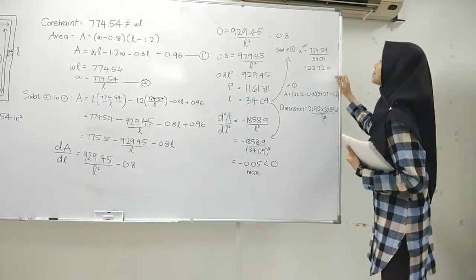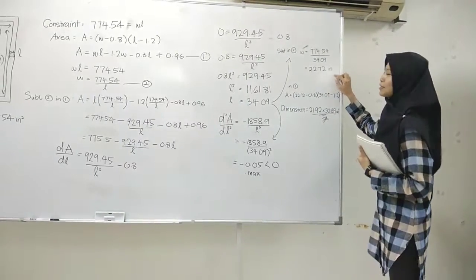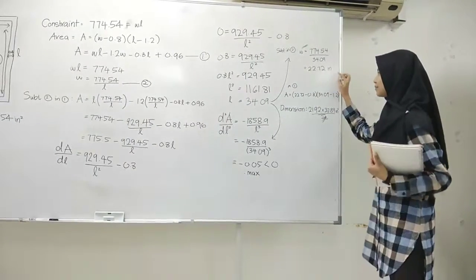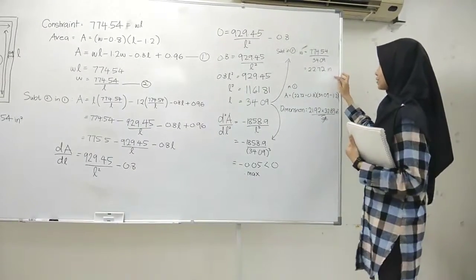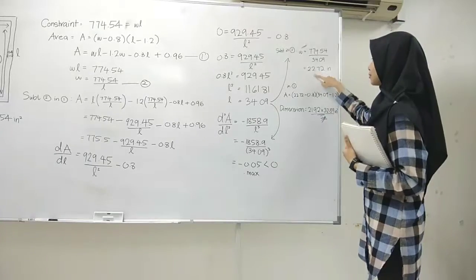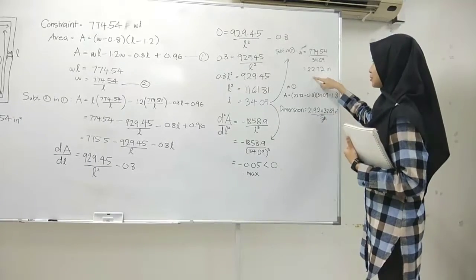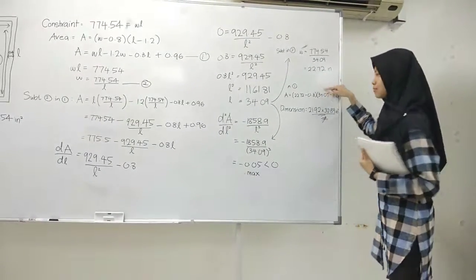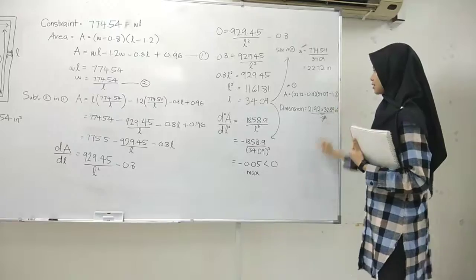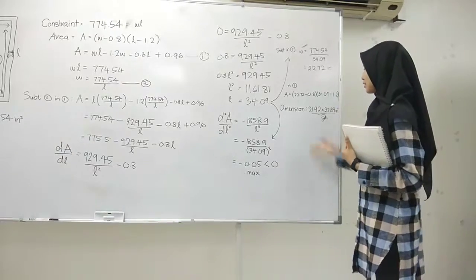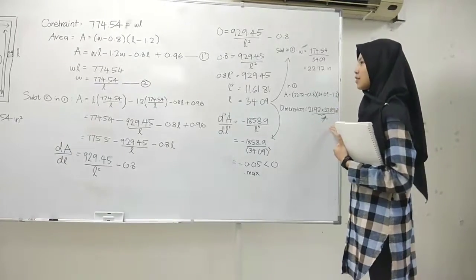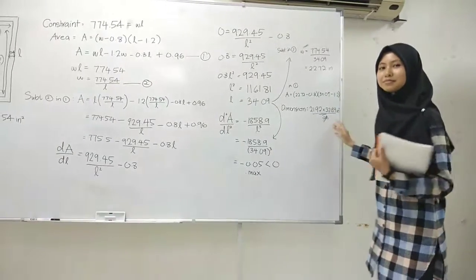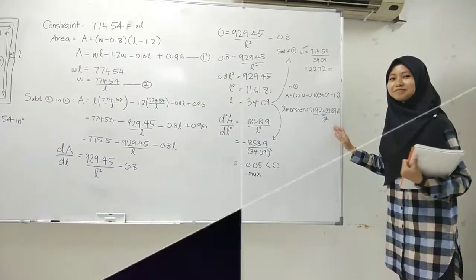After that, we substitute the value of L into the second equation to get the value of W, and then substitute this value into the first equation to obtain the final dimensions of the drawing area.